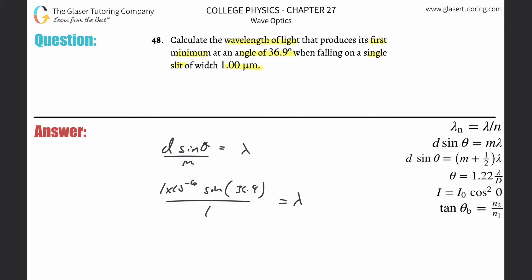So 1 times 10 to the minus 6 multiplied by sine of 36.9. Make sure your calculator is in degree mode. So 6.00 times 10 to the minus 7 meters. That's the wavelength.